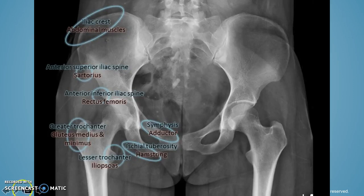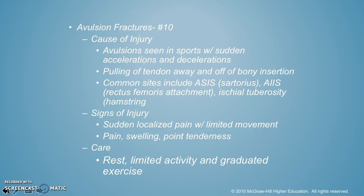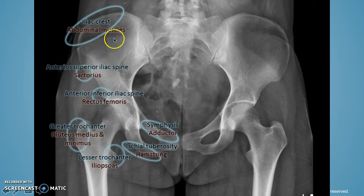This is an avulsion fracture. Avulsions are seen in sports with sudden accelerations and decelerations, and what it does is actually pull the tendon away and off of the bone. Common sites for this are the ASIS, AIIS, and the ischial tuberosity. It's going to be very painful — you might have some swelling and point tenderness, and you just need to rest and limit your activity, then gradually increase your exercise. This was number 10 on your sheet. You can see lots of different muscle attachments that could be avulsed: the abs connect up here, the sartorius, the rectus femoris, your different adductors, your hamstrings.